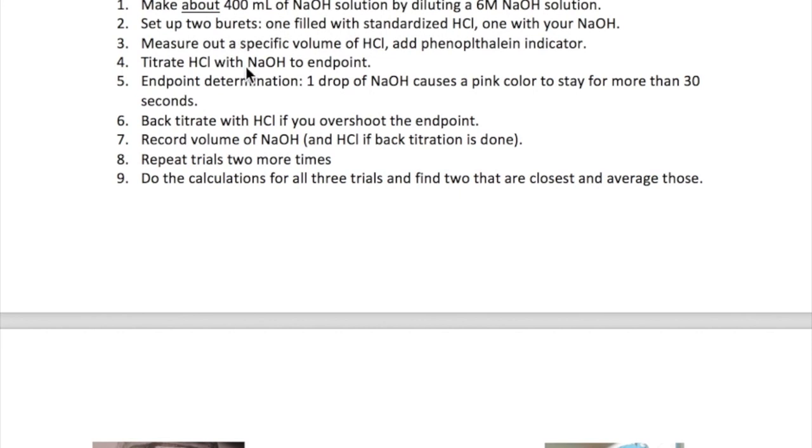The next thing you need to do is set up two burettes, one for HCl and one for the NaOH that you just made. Start the titration by measuring a given volume of HCl in a flask and adding one to two drops of phenolphthalein indicator to it. Titrate the HCl to the endpoint using your NaOH.